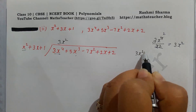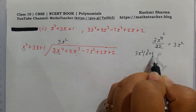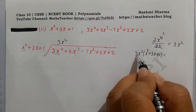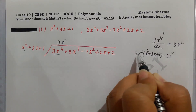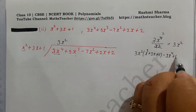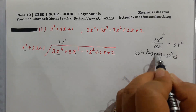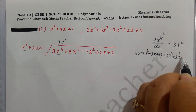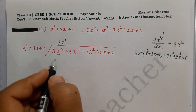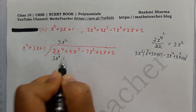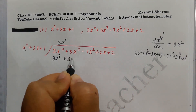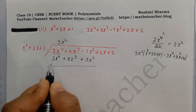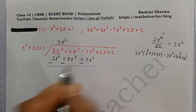Now we multiply 3x² by the divisor x² plus 3x plus 1. So 3x² times x² gives 3x⁴, 3x² times 3x gives 9x³, and 3x² times 1 gives 3x². We write 3x⁴ plus 9x³ plus 3x² below, then change the signs: minus, minus, minus.